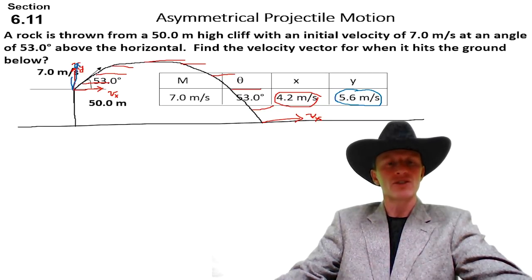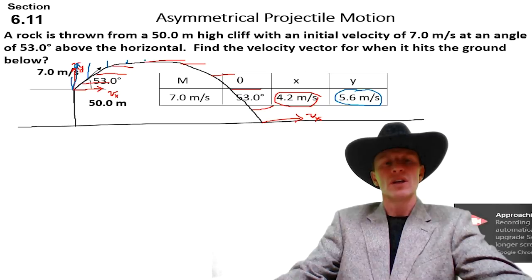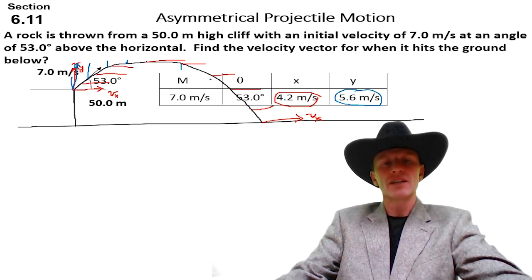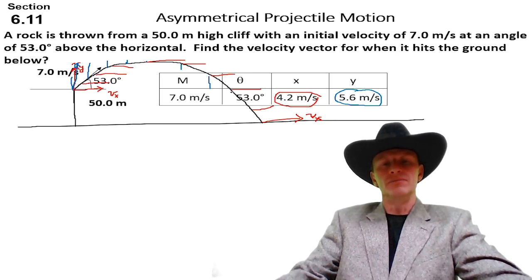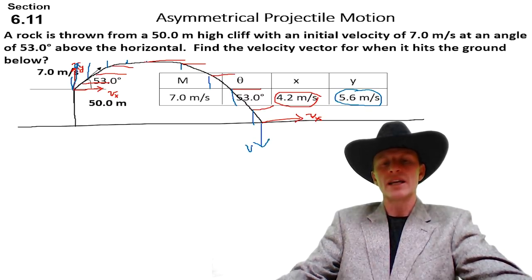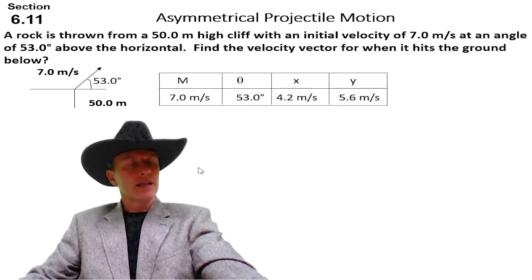As this object is shot, that is going to get smaller and smaller and smaller to the point where it's not even anything. At the highest point, we're going to be at zero, and as it falls, it's going to start getting bigger again. Each one of these is getting bigger as it falls. As it falls, this velocity in the y increases. That's what we need to find, the ending velocity in the y.